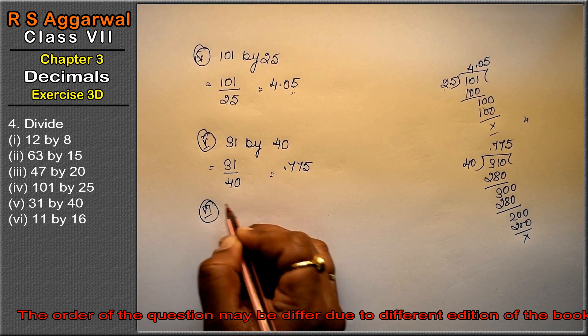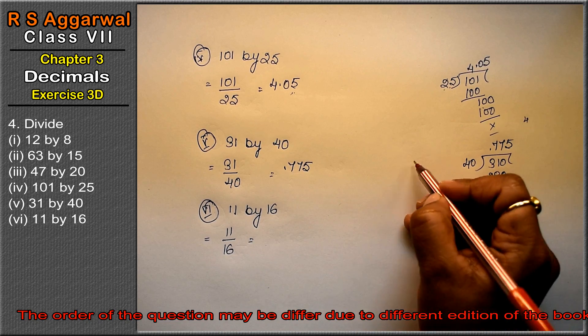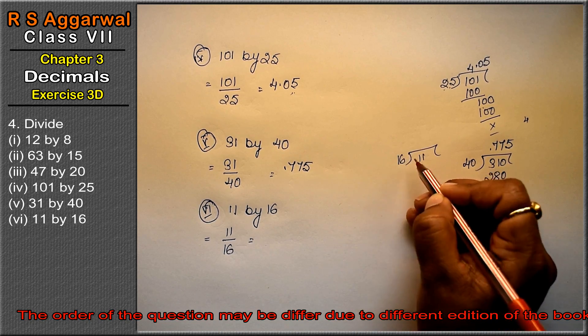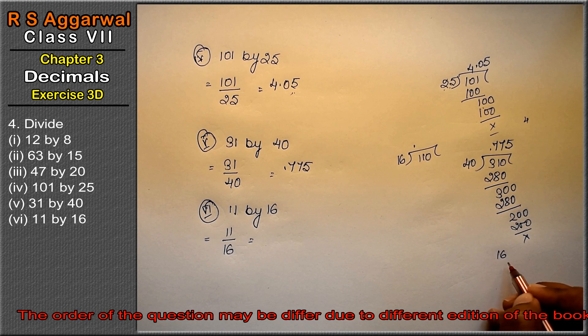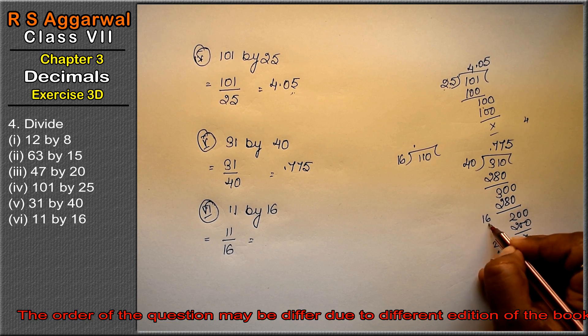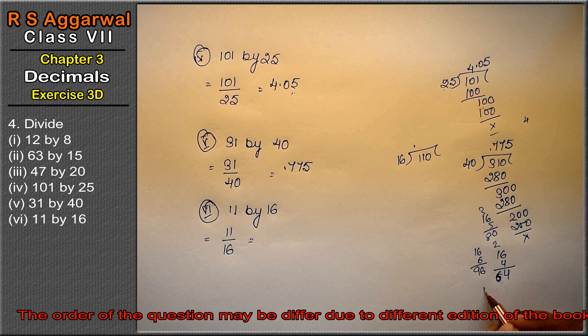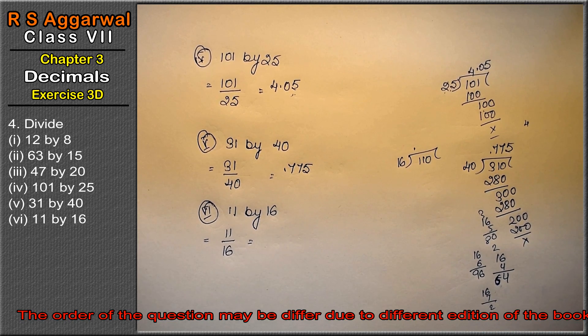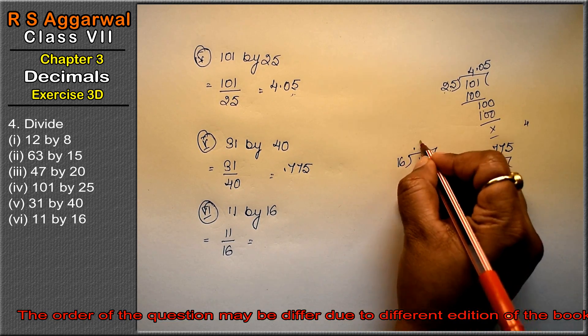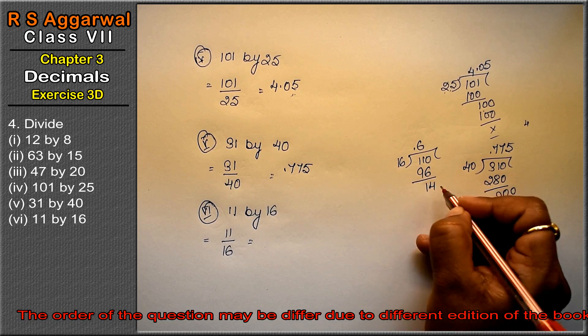Sixth part: divide 11 by 16. Since 11 is less than 16, we add decimal point zero. 16 goes into 110... let's see: 16×6 is 96, 16×7 is 112, which is too much. So 6 goes here: 96. Subtracting: 110 minus 96 is 14. Adding zero to get 140.